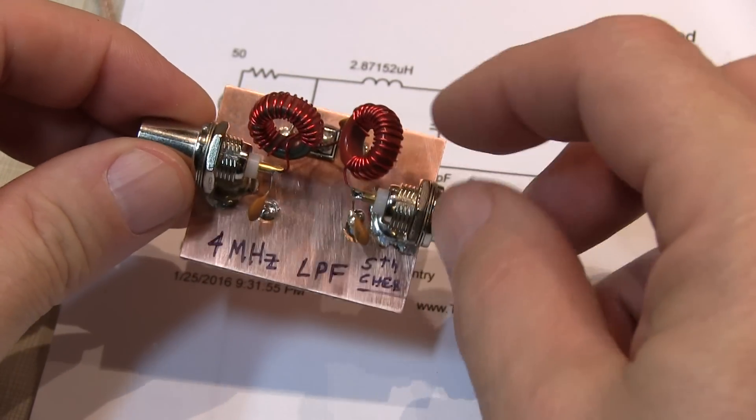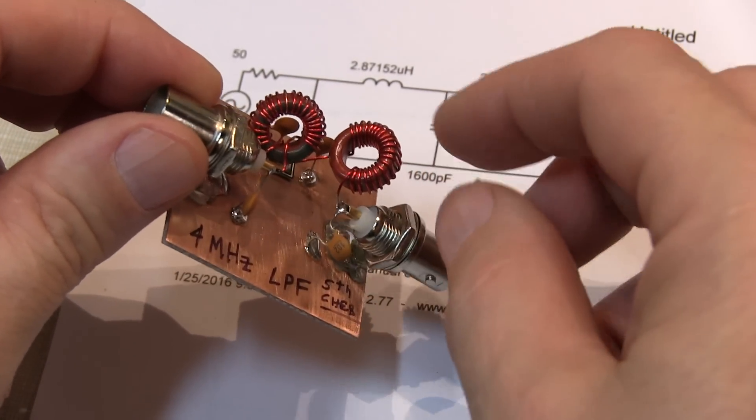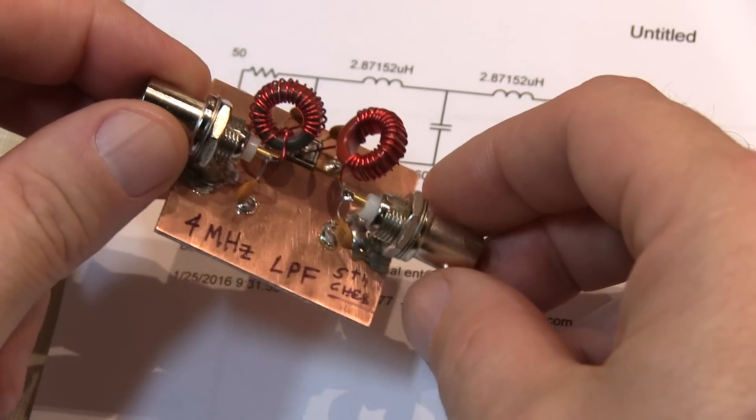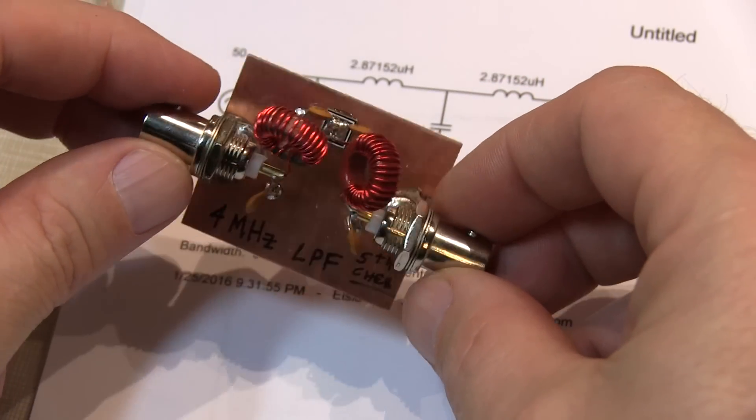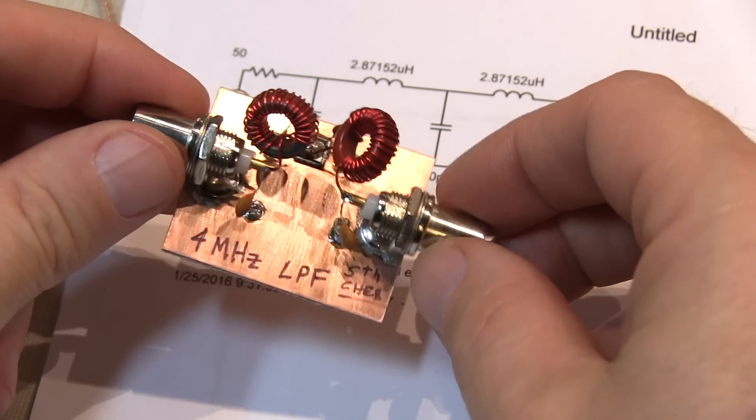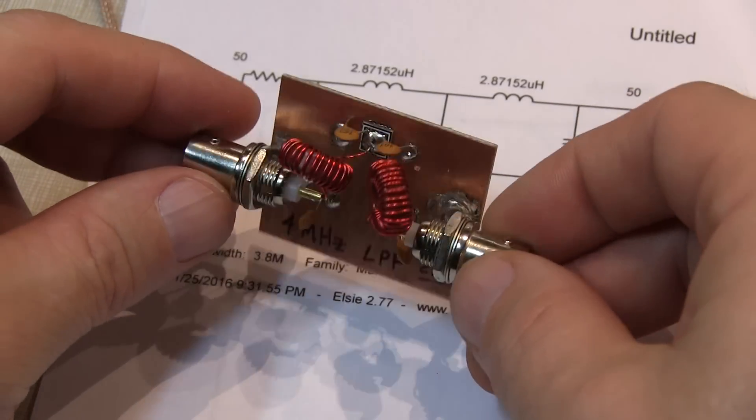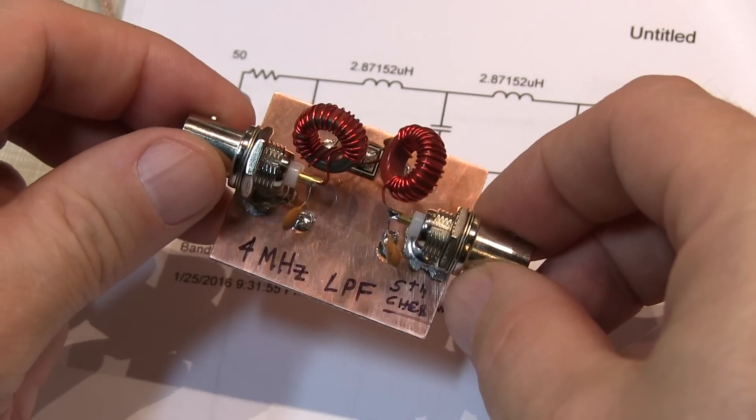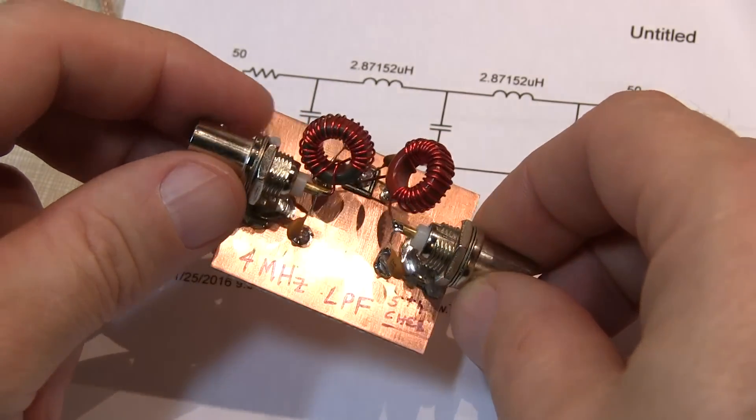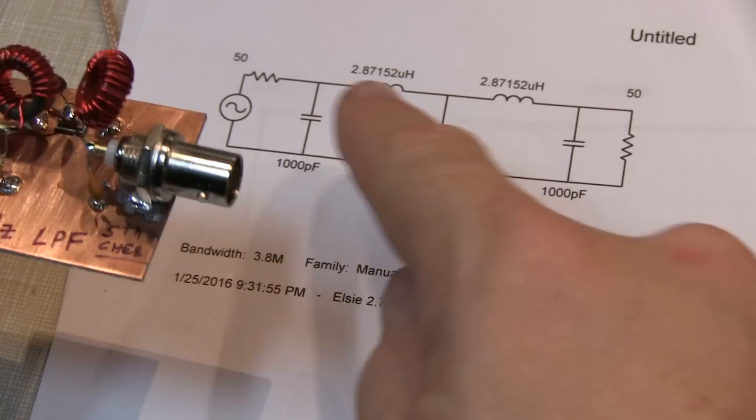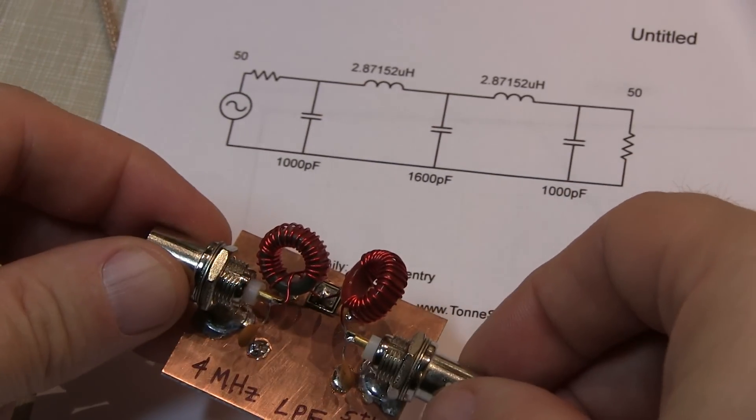You just select the toroid type that you have. This is a T50-2 toroid, and it tells you how many turns to wind for a given value of inductance. So I put them on there, wound them up, and then measured them with my LC meter, and just tweaked the windings a little bit to get as close as I could to those inductor values.